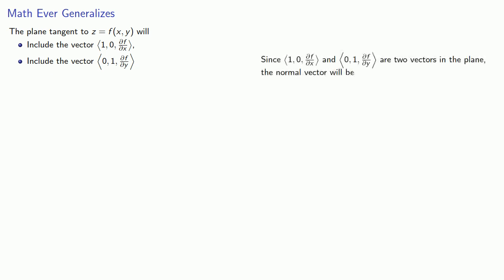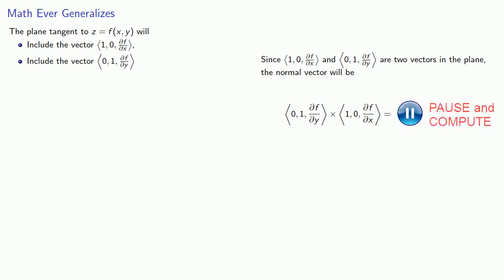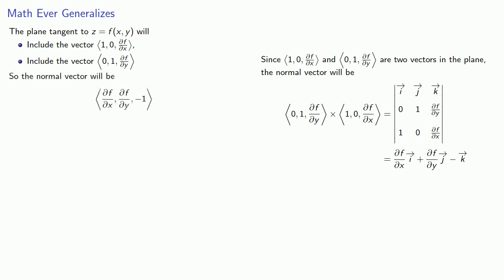And since these are two vectors in the plane, we can find the normal vector. And again, we'll take the cross product this way, and we get... So the normal vector will be (∂f/∂x, ∂f/∂y, -1).